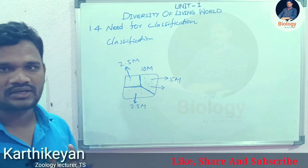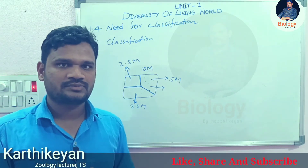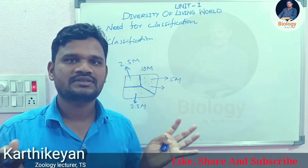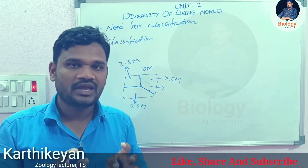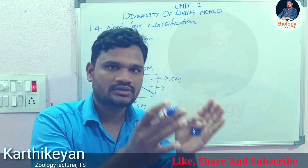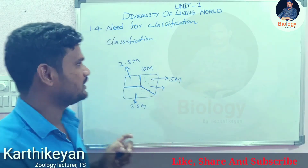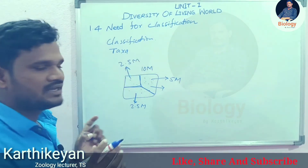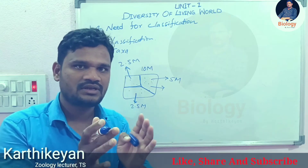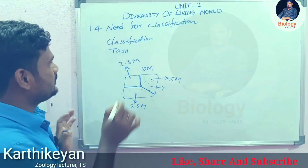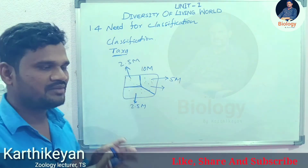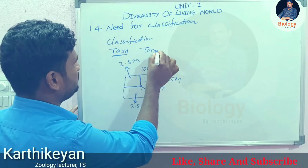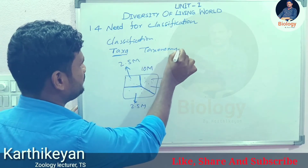Within each group — microorganisms, animals, or plants — there are millions of types, so we have to name those organisms individually. The scientific term for this name is 'taxon,' which is the name given based on special characteristics. The process of naming organisms as taxa is called taxonomy.